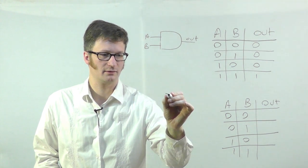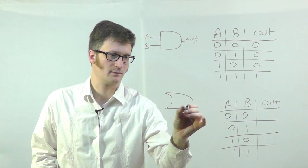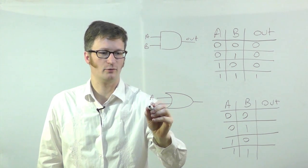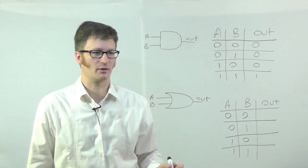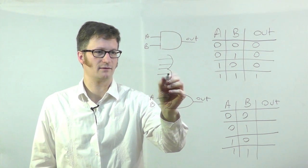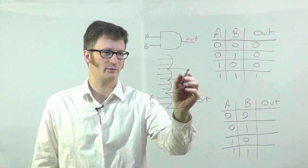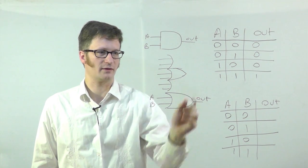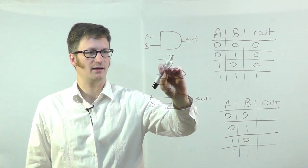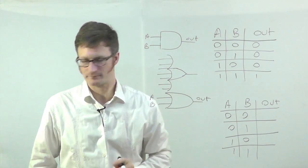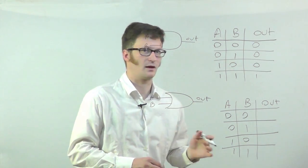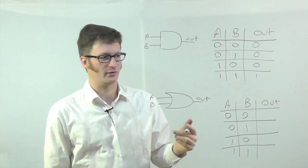Now let's look at another basic one — this is the OR gate. The OR gate has two inputs as well. But if you were to have many inputs, you might draw it like this. An important difference between AND and OR is: AND is flat back, round front. The OR has a curved back and kind of a football-shaped front. I'm only going to show the two-input version of it.